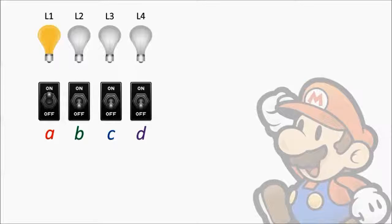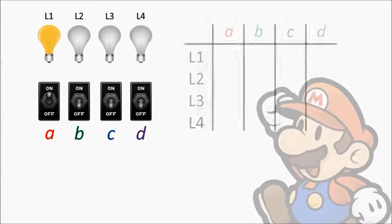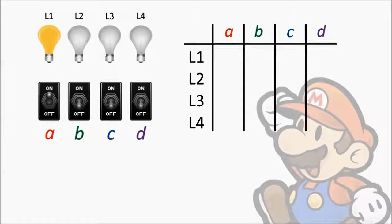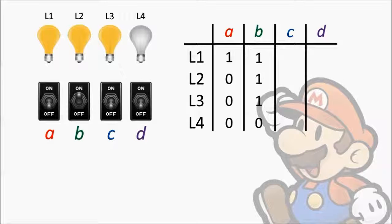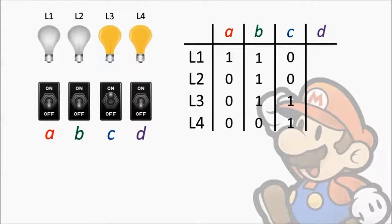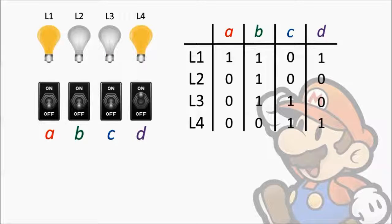Activating switch A toggles only light 1. For this situation, I will be listing all of the toggling information in the following table. A 1 means that the switch toggles that light, while a 0 means that the switch does not affect the light. Activating switch B toggles lights 1, 2, and 3. Activating switch C toggles lights 3 and 4. Activating switch D toggles lights 1 and 4.